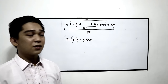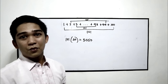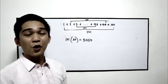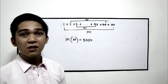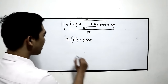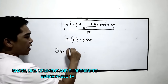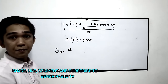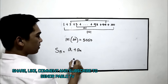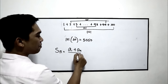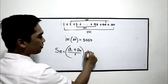From this method came our Sn formula, the arithmetic series formula, denoted by Sn. Which is: a1, the first term, plus an, divided by 2, times the number of terms.